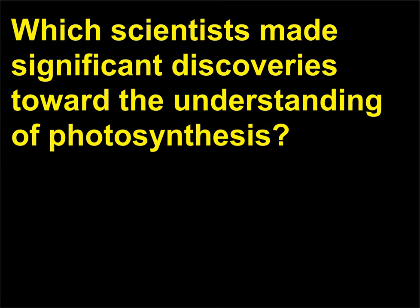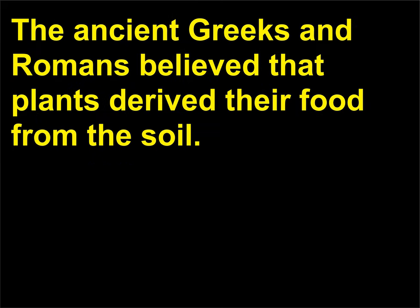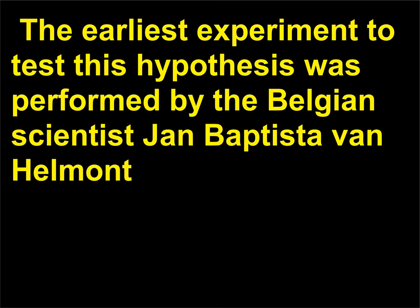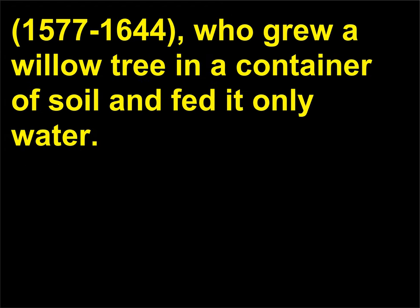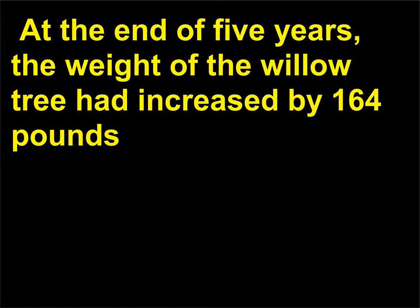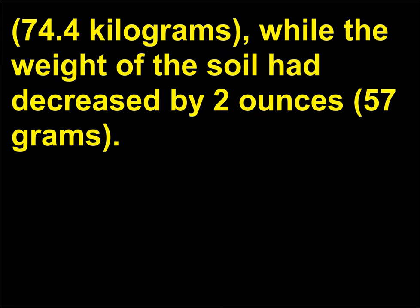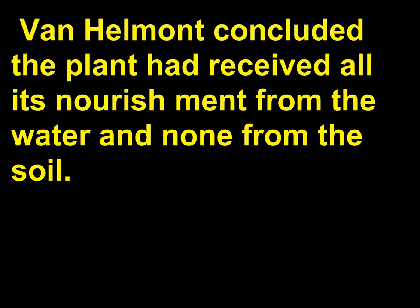Which scientists made significant discoveries toward the understanding of photosynthesis? The ancient Greeks and Romans believed that plants derived their food from the soil. The earliest experiment to test this hypothesis was performed by the Belgian scientist Jan Baptiste van Helmont, 1577–1644, who grew a willow tree in a container of soil and fed it only water. At the end of five years, the weight of the willow tree had increased by 164 pounds (74.4 kilograms), while the weight of the soil had decreased by only 2 ounces (57 grams).